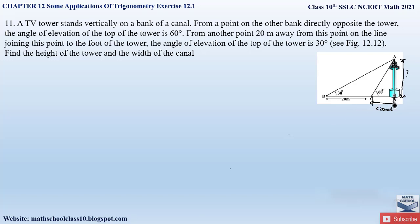We have to find the height of tower AB. Since the width of the canal BC is not given, let us assume it to be x meters. Since the tower is vertical to the ground, a right angle is formed at B. We can observe that there are two right-angle triangles: triangle ABC and triangle ABD. In these two right-angle triangles, we can apply trigonometric ratios to find the height of the tower and the width of canal BC.